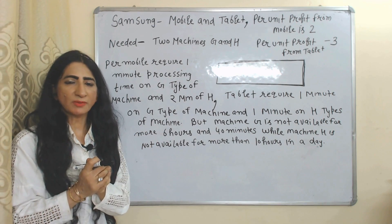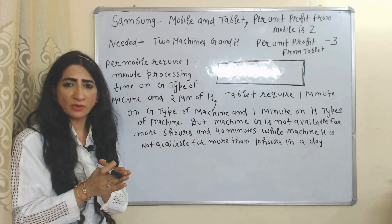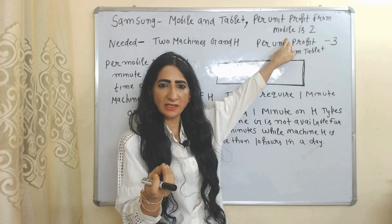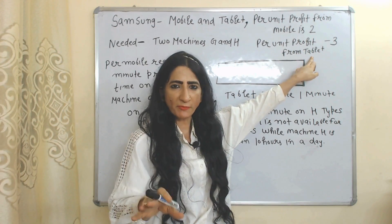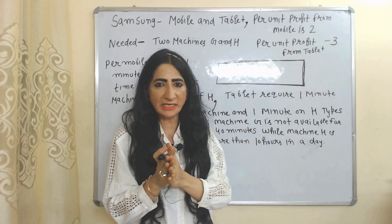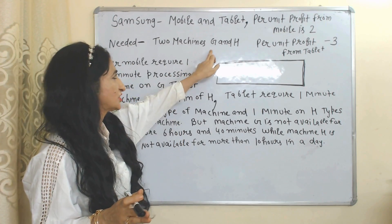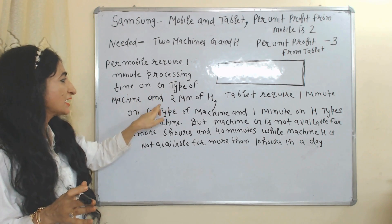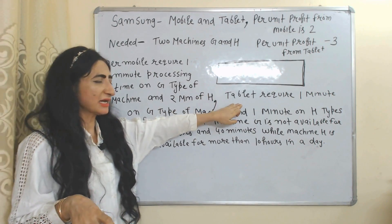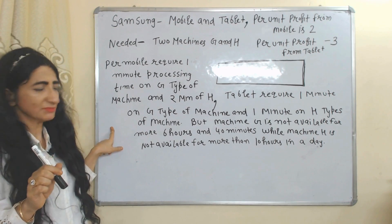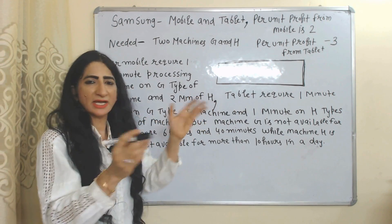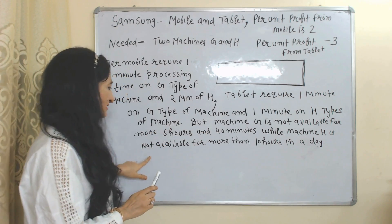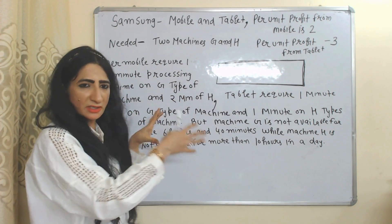Now we are going to talk about the formulation of a Linear Programming problem. In this example, mobiles require 1 minute processing time on machine G and 2 minutes on machine H. Tablets require 1 minute processing time on machine G and 1 minute on machine H. Machine G is not available for more than 6 hours and 40 minutes, while machine H is not available for more than 10 hours in a day.